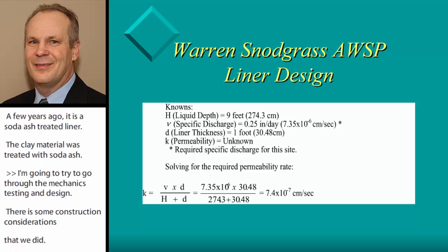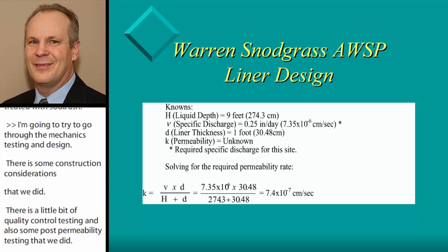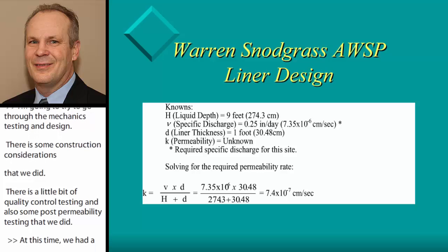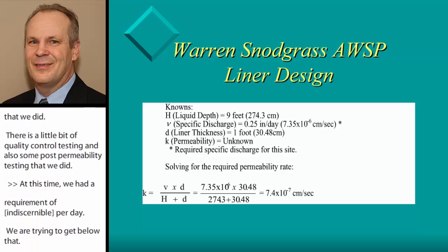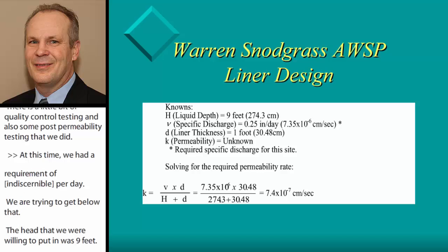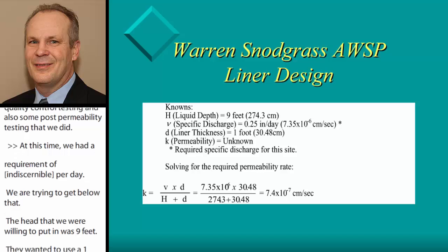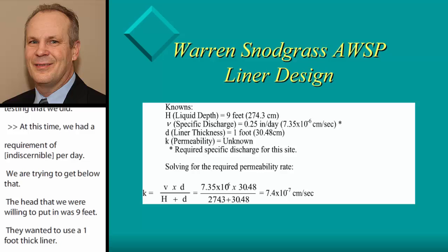We had a requirement of 0.25 inches per day of specific discharge that we're trying to get below. The head they wanted to put in there was about nine feet, and they wanted to use a one-foot thick liner, so you just plug it into D'Arcy's equation and rearrange it a little bit. Our target permeability for this site was 7.4 times 10 to the minus 7 centimeters per second.